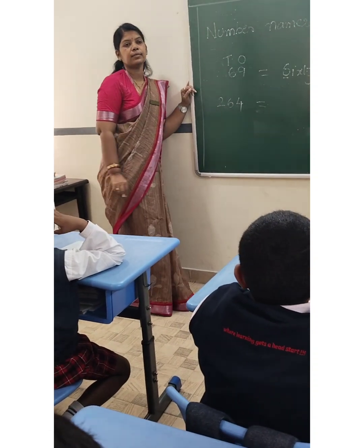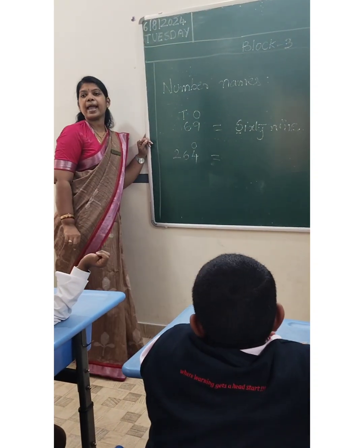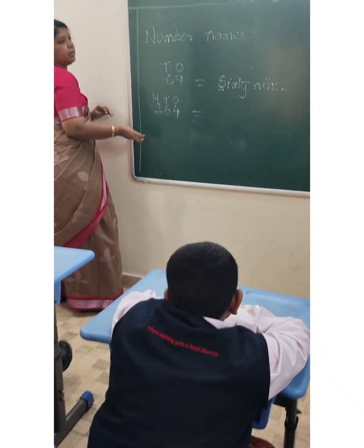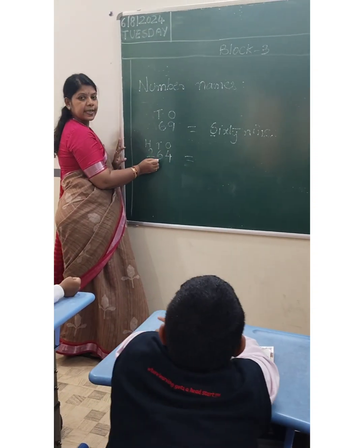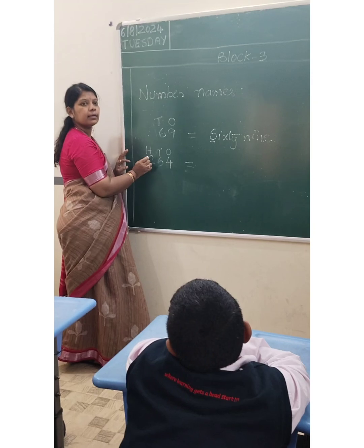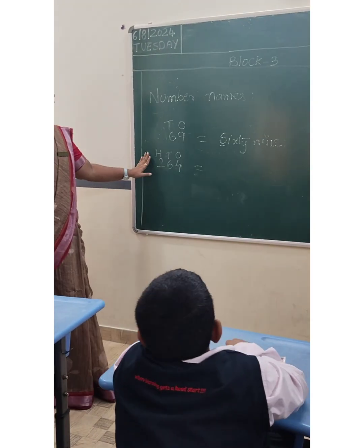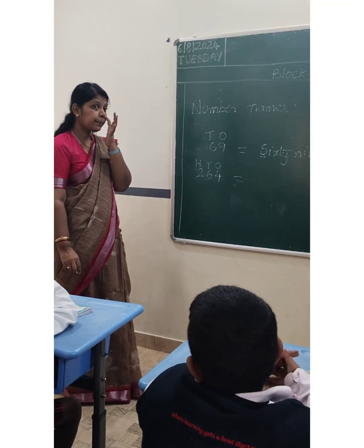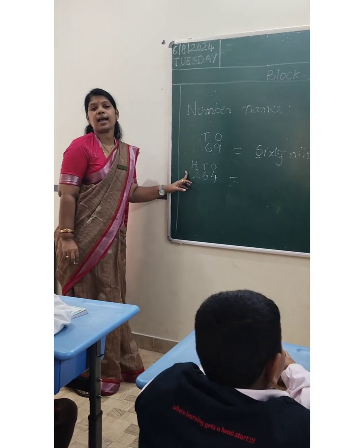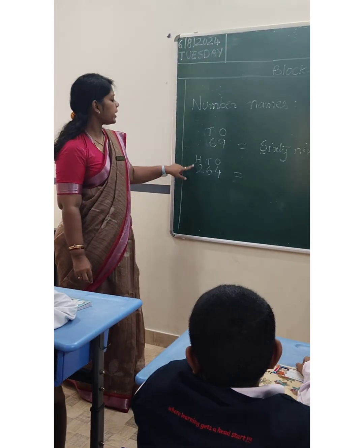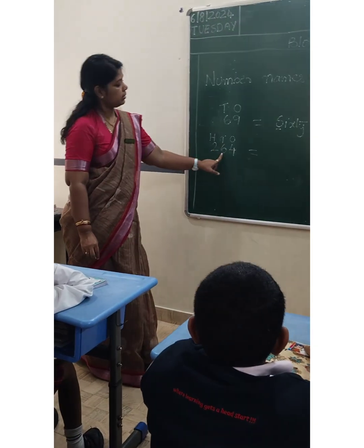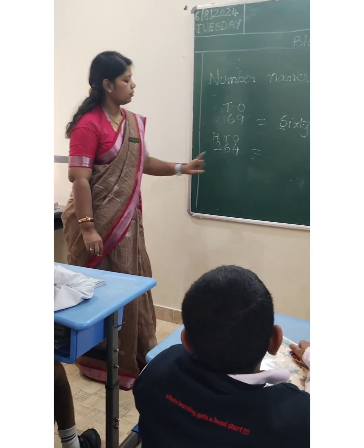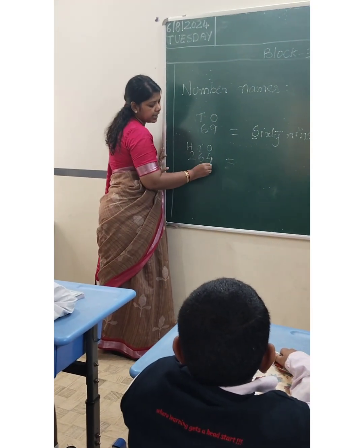Now the next one — four is in which place? One's place. Six is in ten's place. Four is in hundred's place. We always have to start writing from the highest place, which is the hundred's place. So what is here? Two hundred and sixty-four.